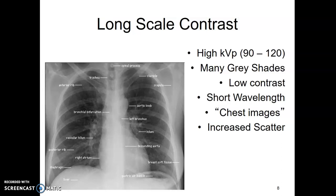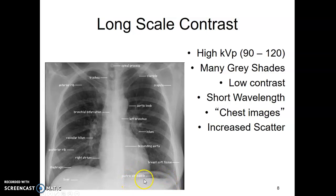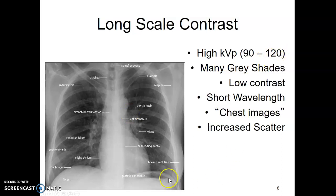Long-scale contrast uses high KVP — this is going to be your chest x-rays, between 90 and 120 KVP. There's a lot of gray in your chest x-ray. You have bone white, the black is air, you have a heart shadow, a gastric air bubble, the liver on this side. There's a lot more going on density-wise than in a hand. That's why this is considered low contrast — more gray makes it low. This is a short wavelength because that fastball is moving quick at 120 KVP. But anytime you increase KVP, you increase scatter. They go hand in hand.